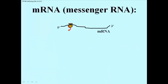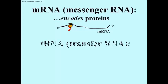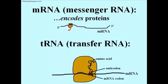Let's take a look at messenger RNA, or mRNA for short. This is a messenger RNA associated with a ribosome, busy translating the information in the messenger RNA into a polypeptide shown here in red. So mRNAs encode proteins and come from genes that encode protein.